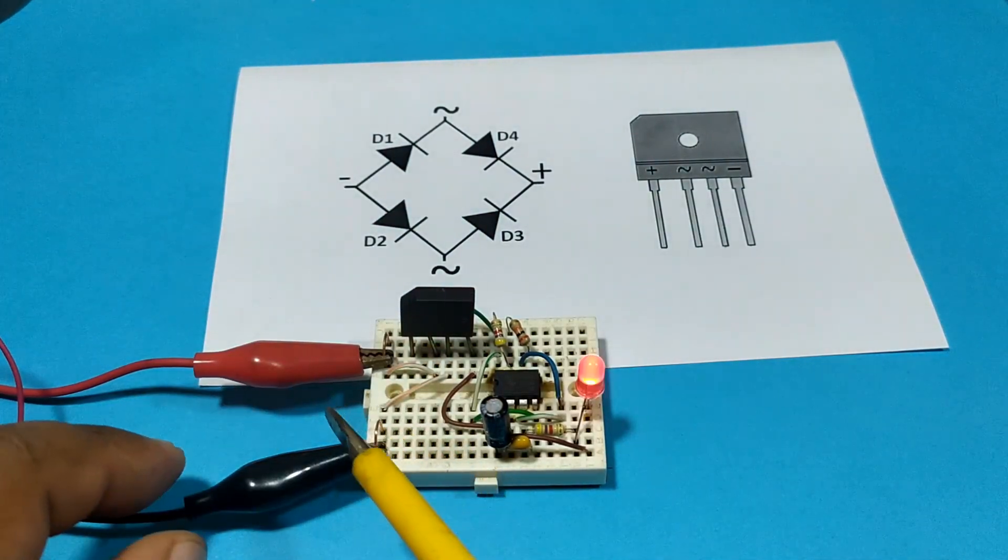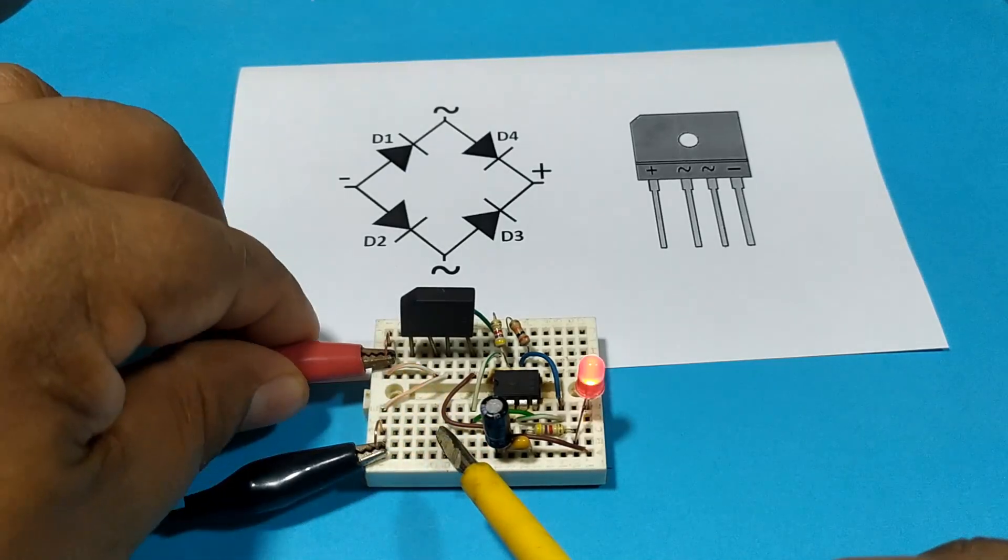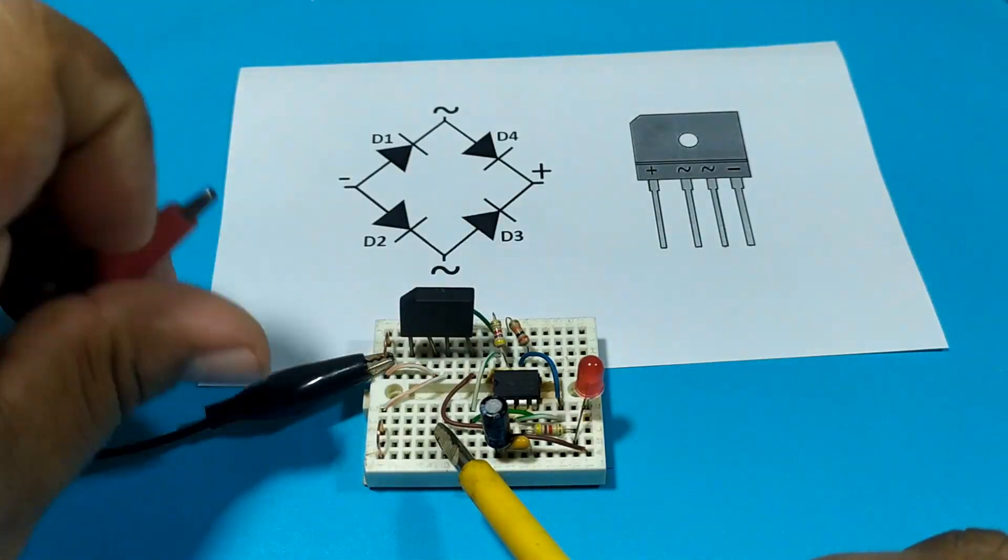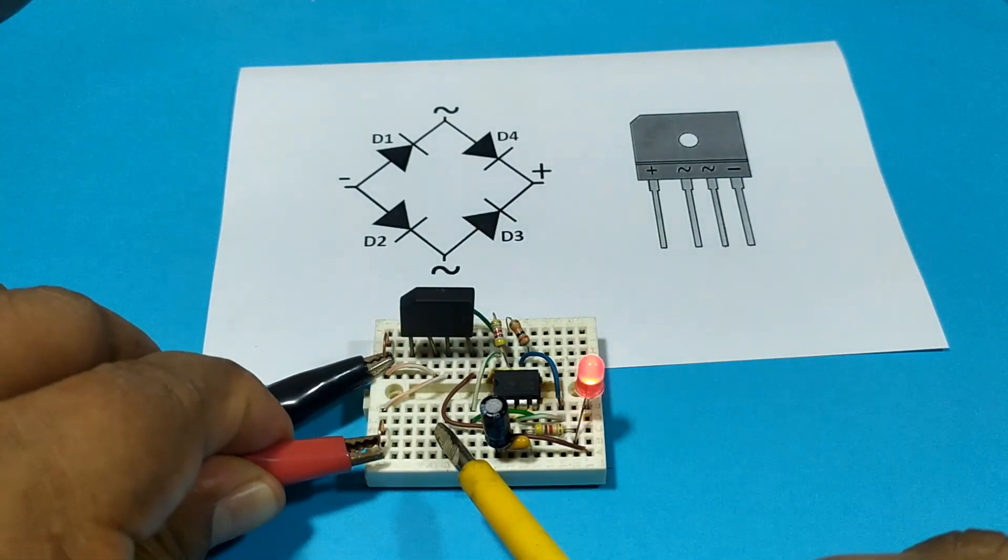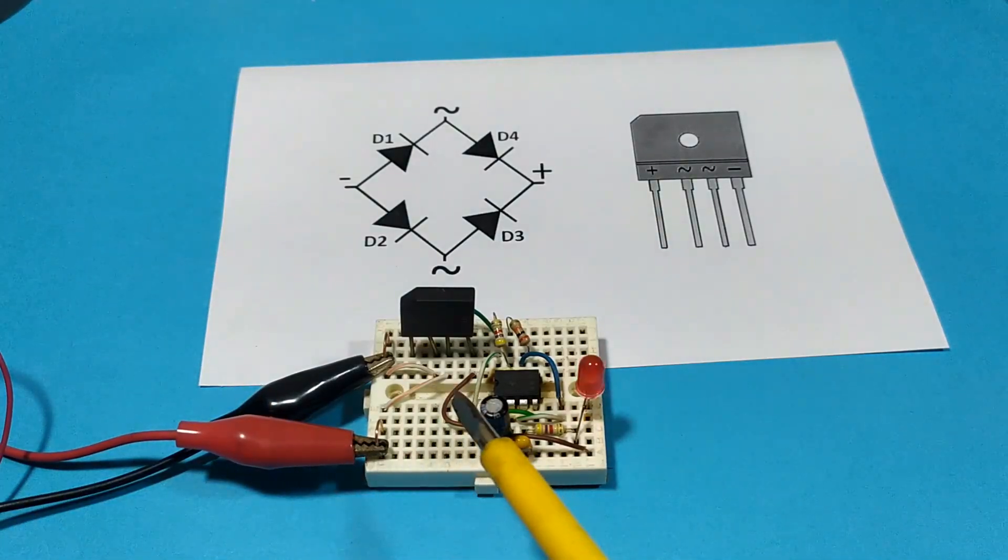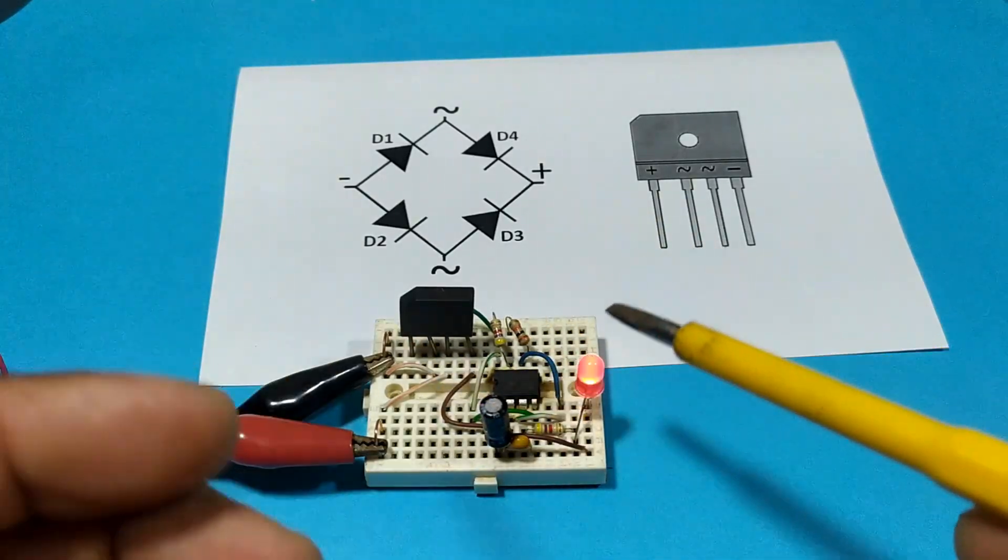Now we are going to reverse. Negative to positive and positive to negative. And there it is connected. The power supply is reversed and nothing happens. Everything is working correctly.